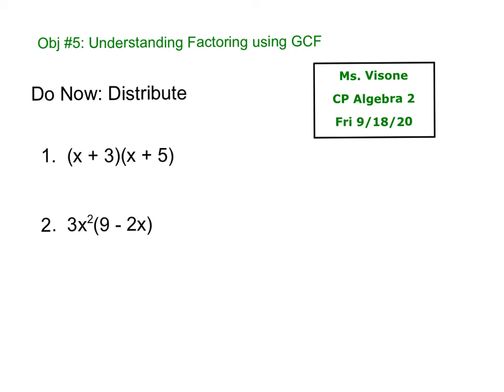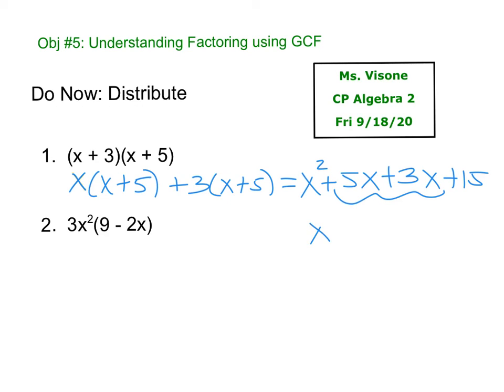So this is double distributing. x times x plus 5 plus 3 times x plus 5. So that gives us x squared plus 5x plus 3x plus 15. Those middle two go together. x squared plus 8x plus 15.